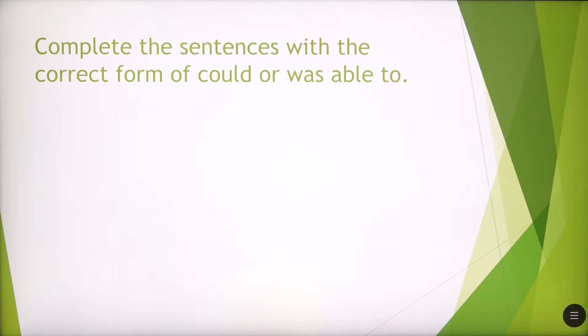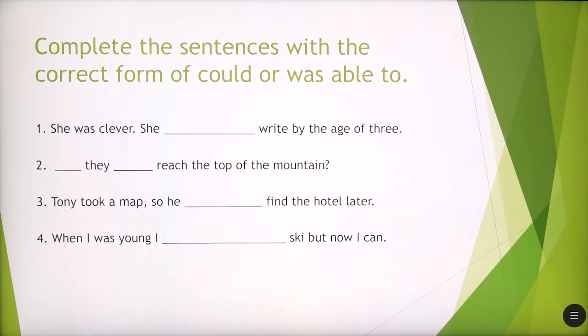We're going with the next exercise. You have to complete the sentences with the correct form of could or was able to. We've got the given sentences here. Which one would you use in the first sentence, could or was able to? She was clever. She could write by the age of three or she was able to write by the age of three. So we can use both in this case.